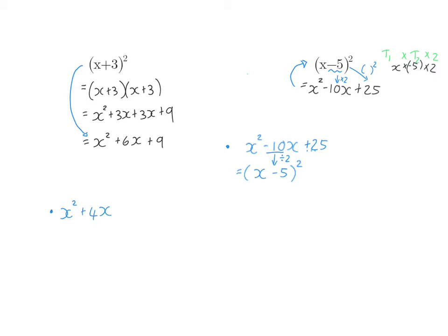Let's have a look at another one. If I give you x squared plus 4x, and you need to determine what I should add to ensure that it factorizes into a bracket squared, I'm going to start with the coefficient of x and half that into my bracket, which will give me plus two. That plus two will now be squared, and that is what I'll have to add.